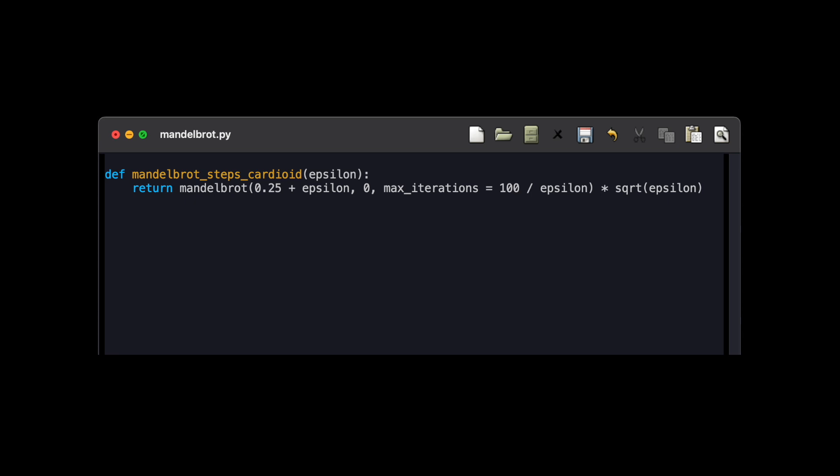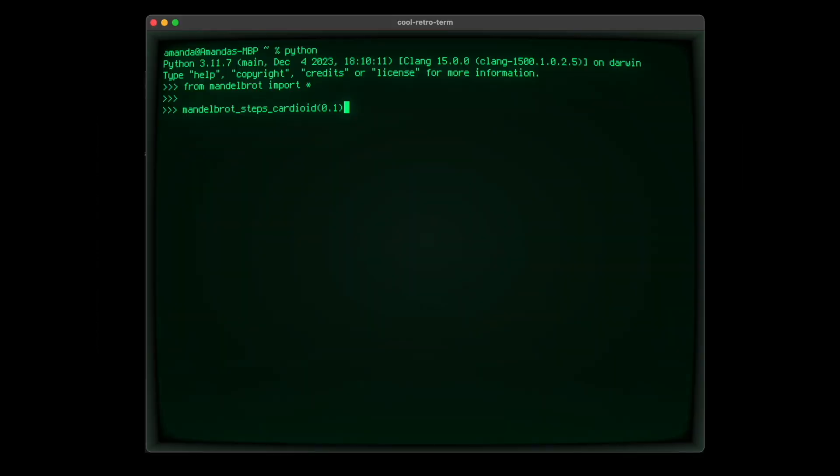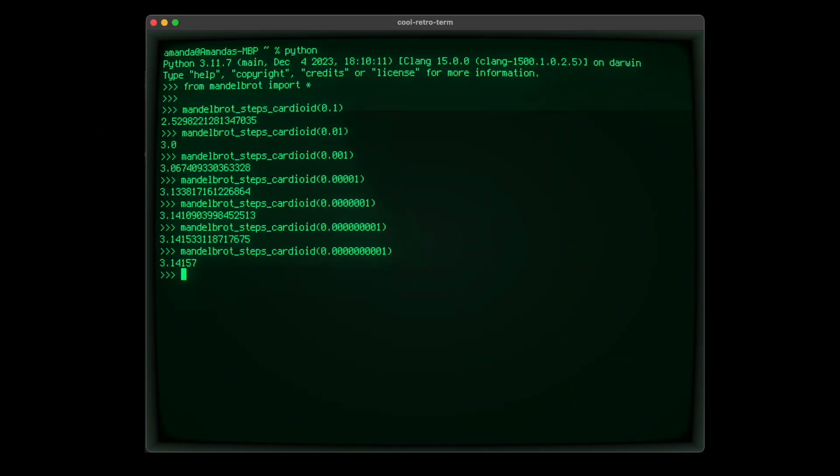Again, we can demonstrate this with another Python function. For smaller values of epsilon, we converge to pi, though much more slowly.